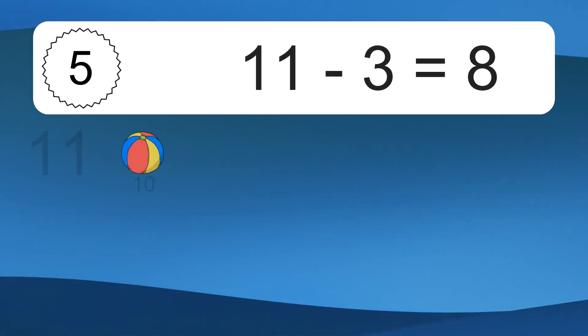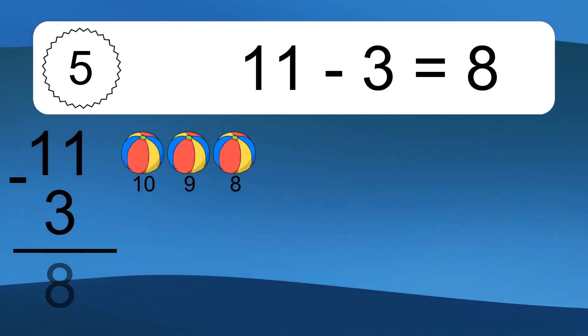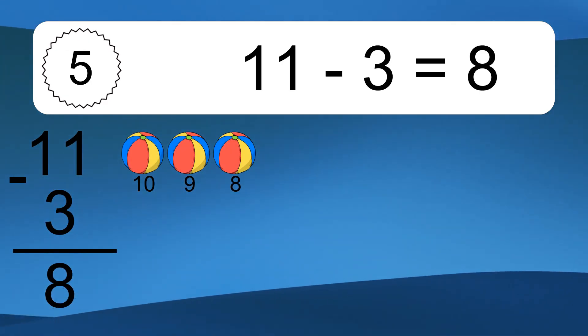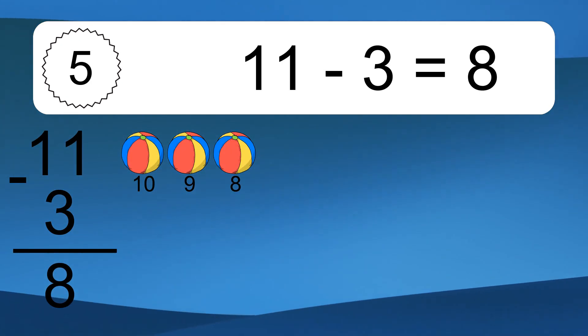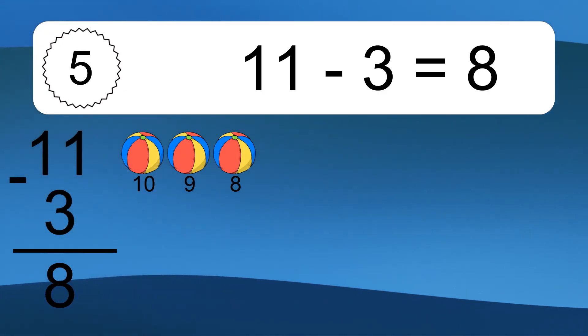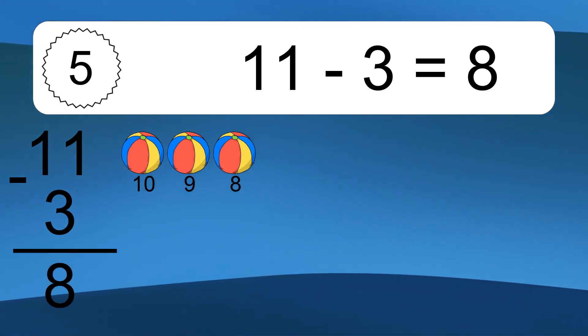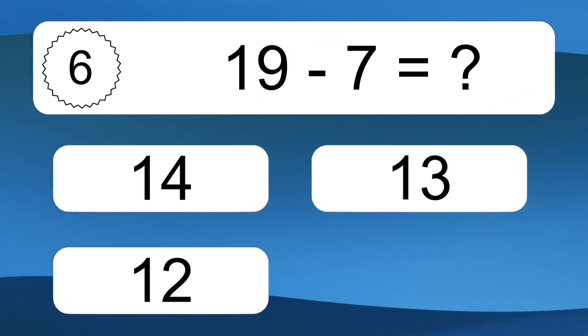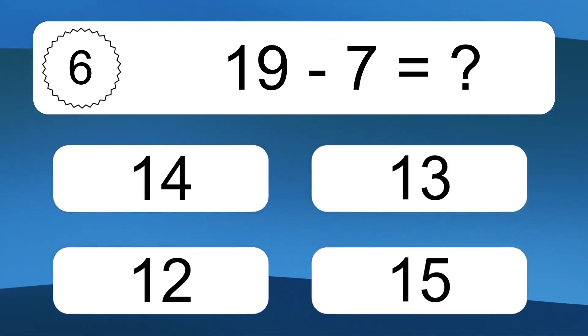11 minus 3 equals what? 11 minus 3 equals 8. Let's count it: 10, 9, 8. 19 minus 7 equals what?